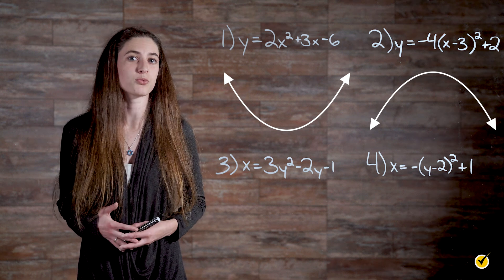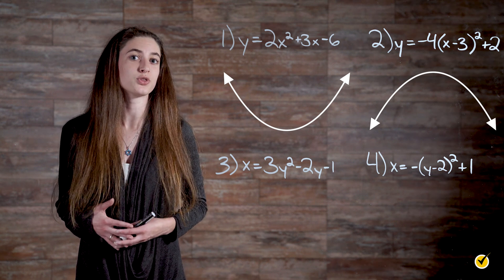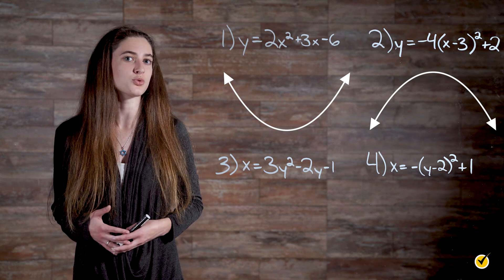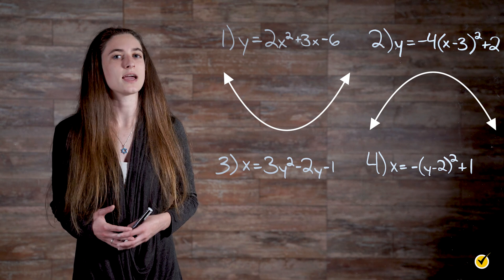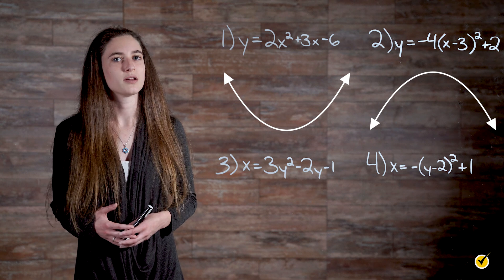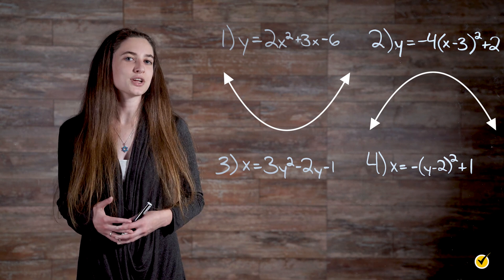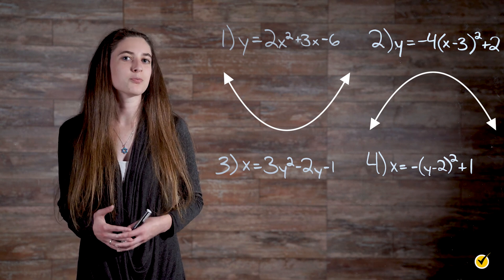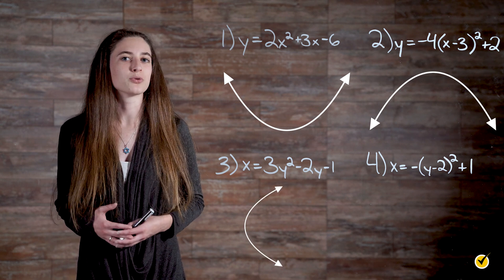Our third equation is x equals 3y squared minus 2y minus 1. This is a standard form quadratic equation with the y variable squared and a equals 3. Because a is greater than 0, the parabola will open right.